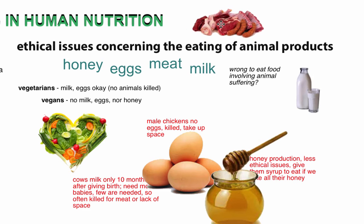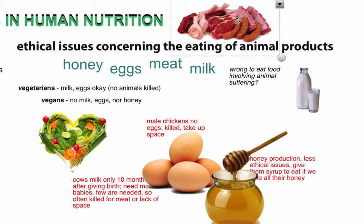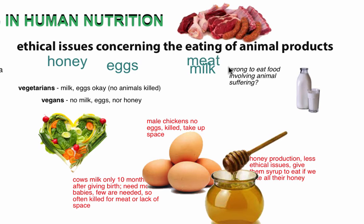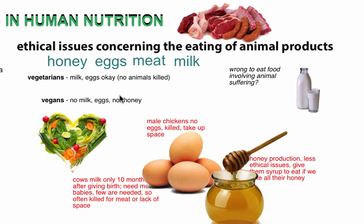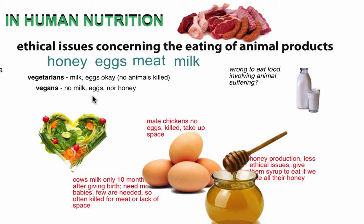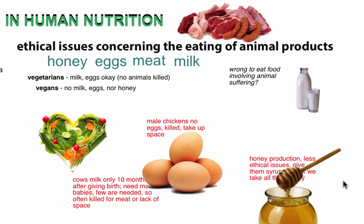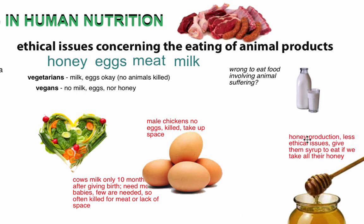Now let's look at ethical issues concerning the eating of animal products. For vegetarians and vegans, as long as you have good reasons and understand that you need to supplement with the proper nutrients, you should be okay. Honey, eggs, meat, and milk are important items in this discussion. Vegetarians are okay with drinking milk and eating eggs because no animals have to be killed to produce those. Vegans, though, avoid all animal products — no milk, no eggs, not even honey.